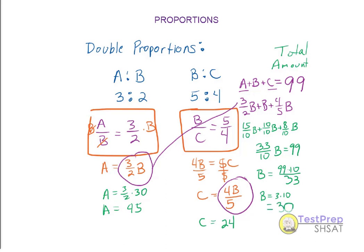If the question asks how many B's there are, we know it's 30. For A and C, we substitute 30 back into our equations: A equals 3 halves times 30, or 45, and C equals 4 times 30 divided by 5, which is 24. Adding up: 45 plus 30 plus 24 equals 99, which checks out. We can verify our answers at the end as well.